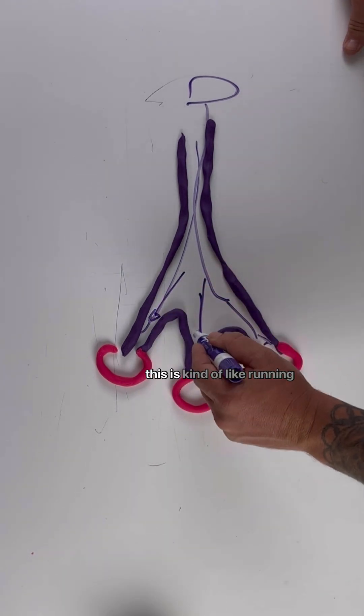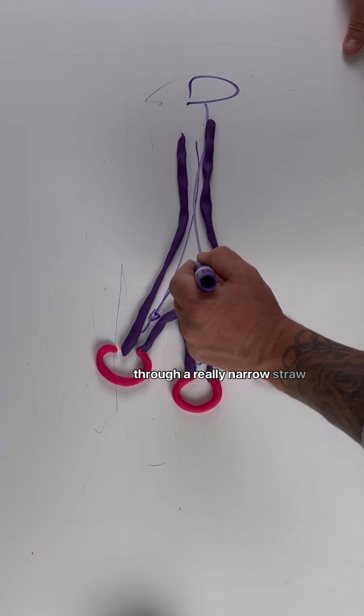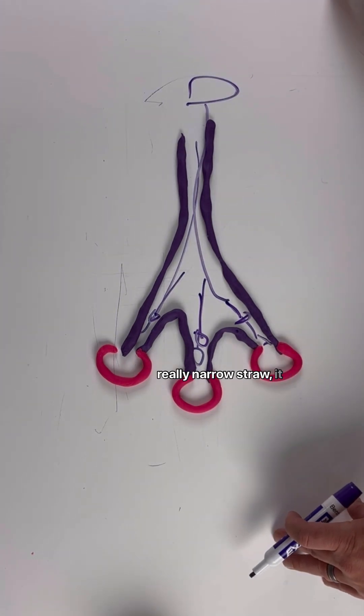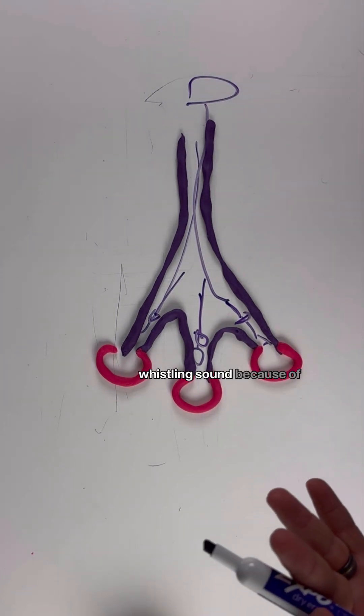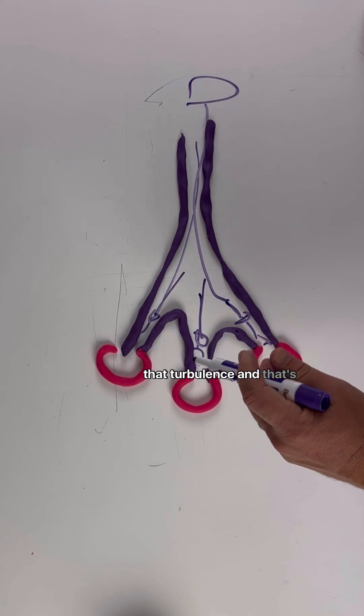When air runs through a really narrow straw, it creates almost like a whistling sound because of that turbulence, and that's what gives it that wheezing sound. That high-pitched sound is the air moving in and out of the bronchioles with the narrowing.